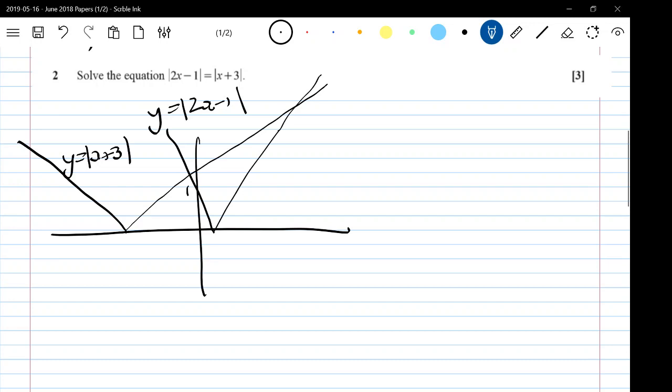So, we've got the positive branch of x plus 3 is intersecting the positive branch of 2x minus 1. Rearrange that, and we get x equals 4. So, that point is 4.